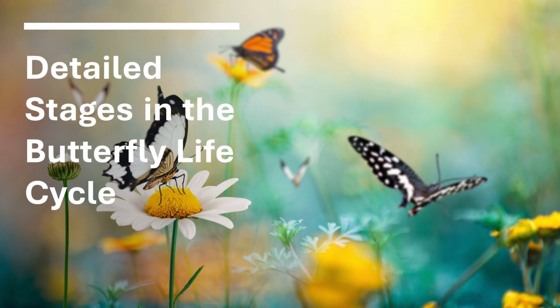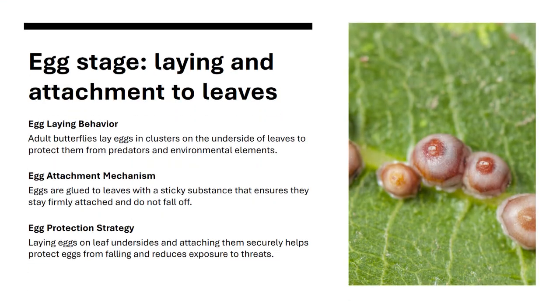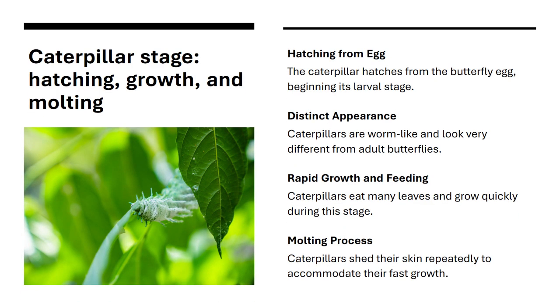Let's look closer at the butterfly's life cycle. The egg is laid and attached to leaves, then the caterpillar hatches, grows, and molts. Next is the pupa stage with the formation of a chrysalis and transformation, and finally the adult butterfly emerges, looking very different from the caterpillar. Adult butterflies lay eggs in clusters on the underside of leaves, using a sticky substance to keep them attached. This protects the eggs from predators and environmental challenges by keeping them hidden and secure. The caterpillar hatches from the egg and looks very different from an adult butterfly. It eats many leaves and grows quickly, shedding its skin several times as it gets bigger.